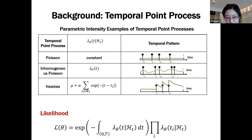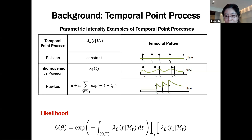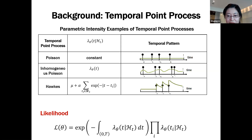Once we have a model for the intensity function, we can learn the model parameters by maximizing the likelihood, which is a function of the intensity function. The evaluation requires computing an integration term — an integral of the conditional intensity function over the time space — and a product of the intensity function evaluated at the event times. This integration term is usually difficult to evaluate, especially for sophisticated intensity functions.